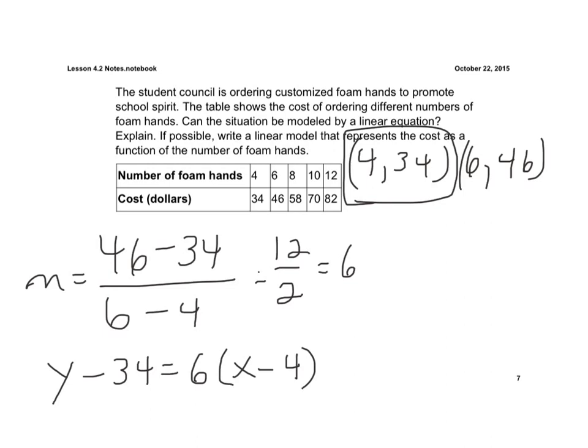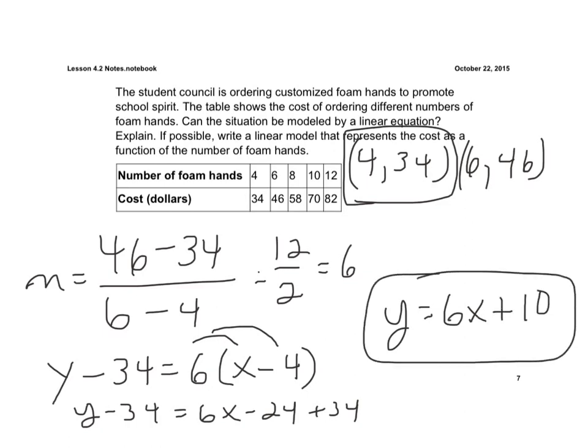And we're going to write this into slope-intercept form. So I'm going to distribute this through. I have y minus 34 is equal to 6x minus 24. And now I'm going to add 34 to each side, add 34 to each side, and I get y is equal to 6x plus 10. All right, and now there's my answer for this. This is the linear model that represents the cost for the number of foam hands.